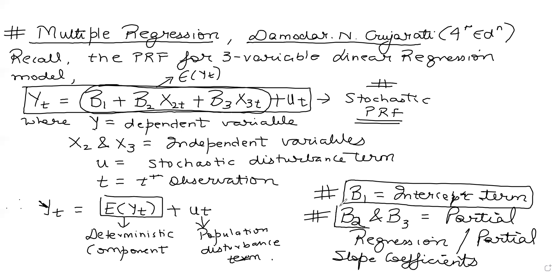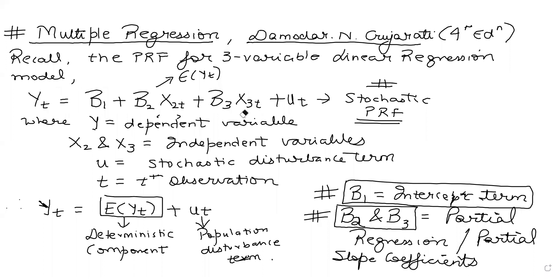B2 represents the change in the mean value of Y per unit change in X2, keeping X3 constant. B3 represents the change in the mean value of Y per unit change in X3, keeping X2 constant. That is why these are called partial regression coefficients — when interpreting B2, you hold X3 constant, and vice versa.